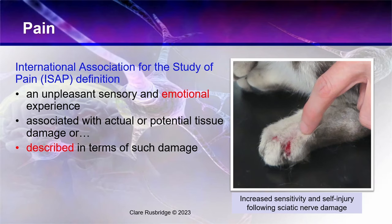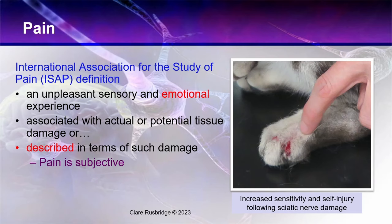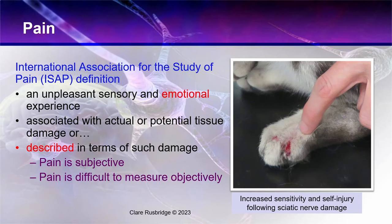This definition is written for humans, and animals cannot describe pain. In terms of neuropathic pain, the diagnosis in humans is often based on description — burning, stabbing, like an electric current going down my leg. Humans can eloquently describe this unpleasant sensory experience, but animals cannot, and therefore diagnosis of neuropathic pain in animals is much more challenging. Pain is subjective and very difficult to measure objectively.